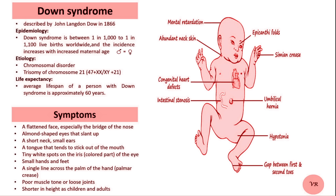Down syndrome can be diagnosed before birth, that is prenatally, or after birth, that is postnatally. Prenatal tests like amniocentesis or chorionic villus sampling can confirm the diagnosis. After birth, the characteristic physical features often lead to a clinical diagnosis, and genetic testing such as karyotyping can confirm the extra chromosome presence.